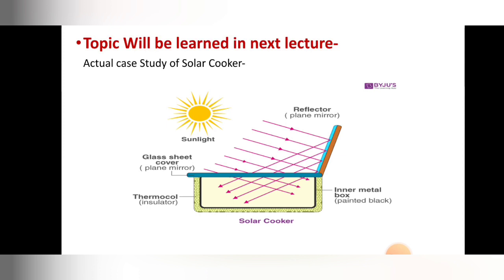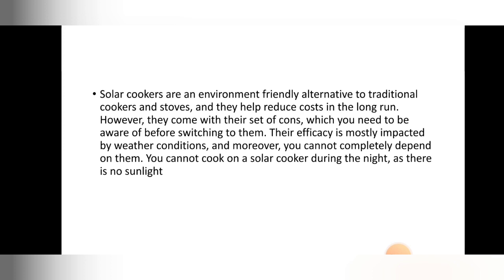When sunlight is incident on the reflector mirror, that mirror reflects some light and absorbs light, transferring heat to the cooker at the bottom, and the food gets cooked. Solar cookers are an environmentally friendly alternative to traditional cookers and stoves, and they help to reduce cost in the long run. For cooking food for a large number of people, you should use solar cookers to reduce the cost of cooking.